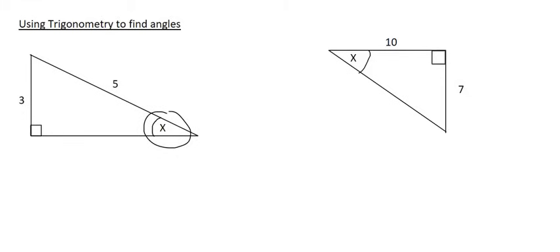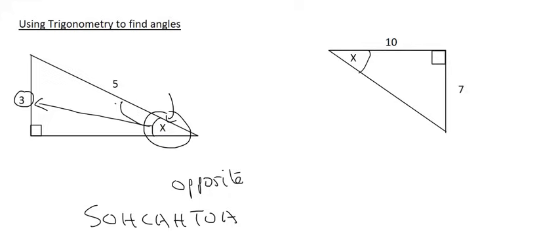It's very easy. We just go back to SOH CAH TOA and we look at the angle that we're looking for which is x, and from that angle we look at what we have. Well we've got the opposite. So I'm going to write here we have the opposite and we have the adjacent.